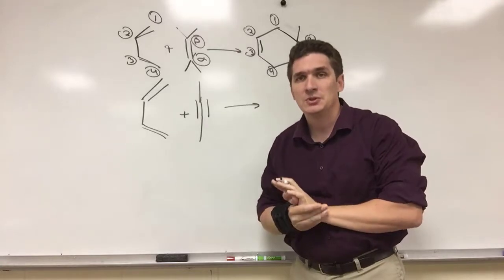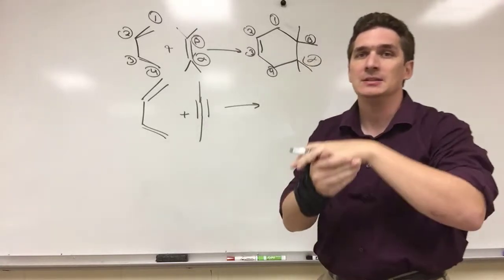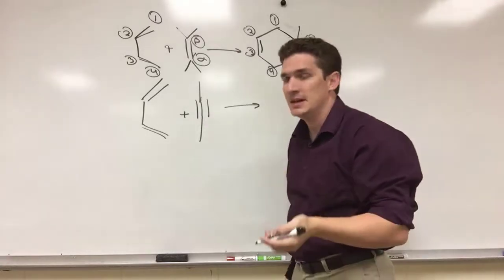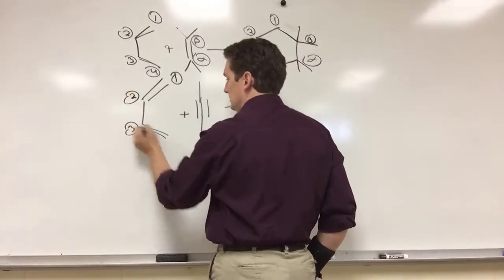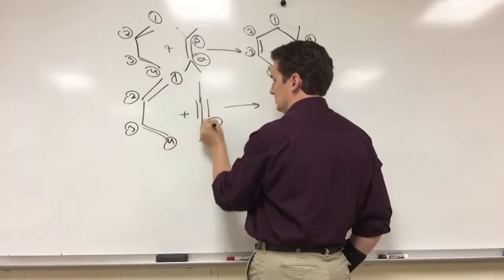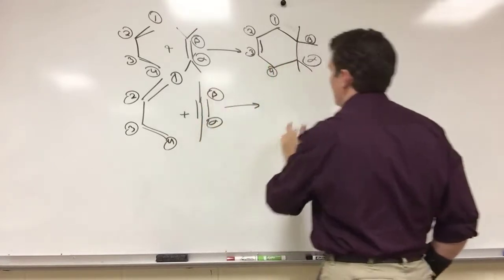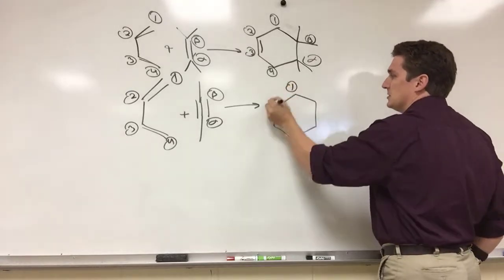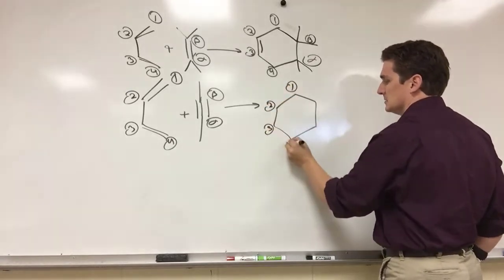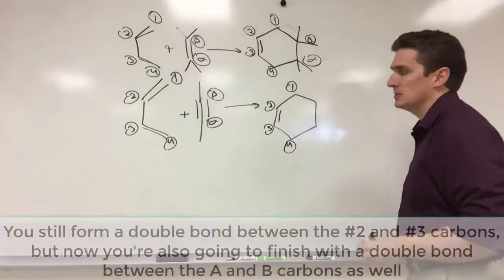We're going to take a similar approach with alkynes reacting with these dienes. So again, you're going to want to number your carbons. You're still going to form a cyclohexane ring and you're still going to form a double bond between your second and third carbons.